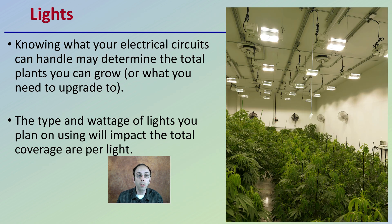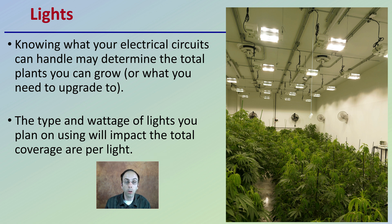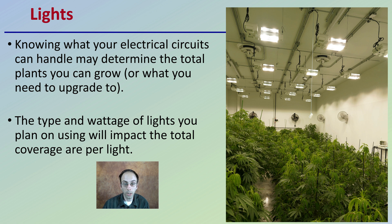You want to know what your electrical circuit can handle, as this may determine the total plants you can grow or what level you need to upgrade to. The type and wattage of lights you plan on using will impact the total coverage area per light. In addition, you want to take into consideration other factors such as HVAC systems, fans, and other things that may need power, but lights tend to require the most wattage.